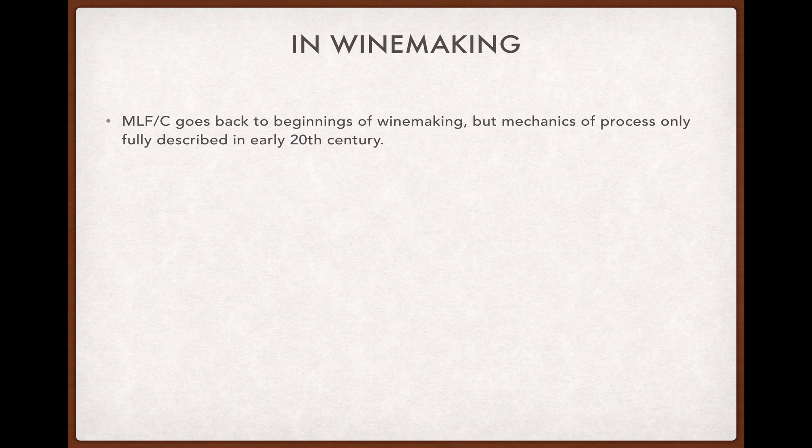Since it's a chemical process involving bacteria that grape juice can come in contact with naturally, malolactic conversion goes back to the very beginnings of winemaking. But, as with so much else involved in wine chemistry, the mechanics of the process weren't fully described until recently — in mallow's case, this didn't happen until the early 20th century.